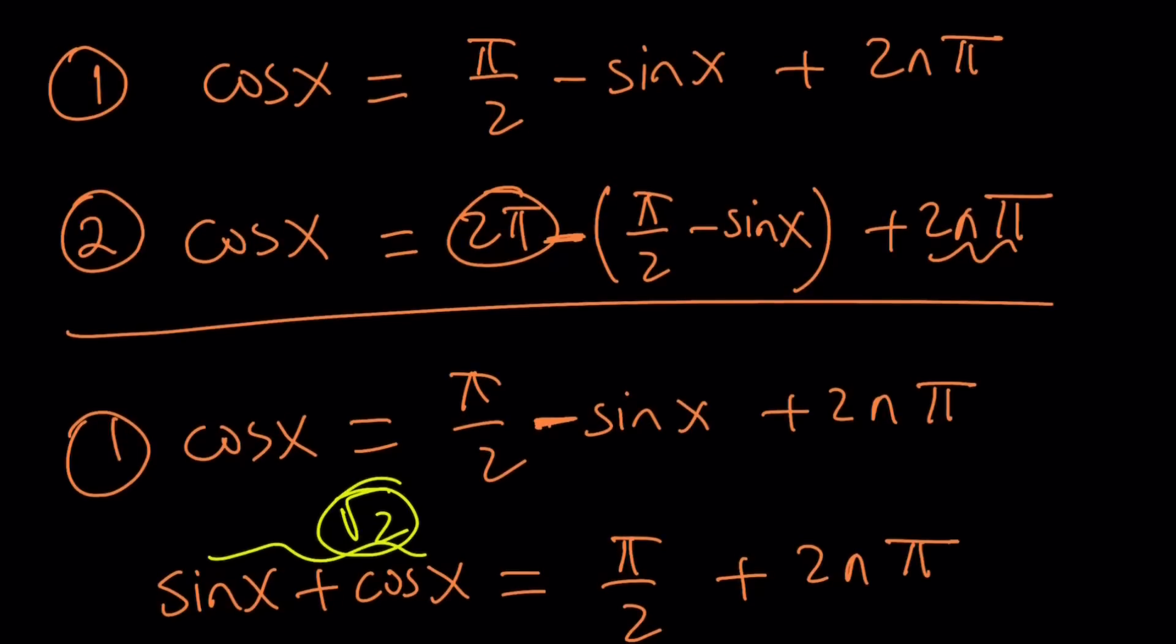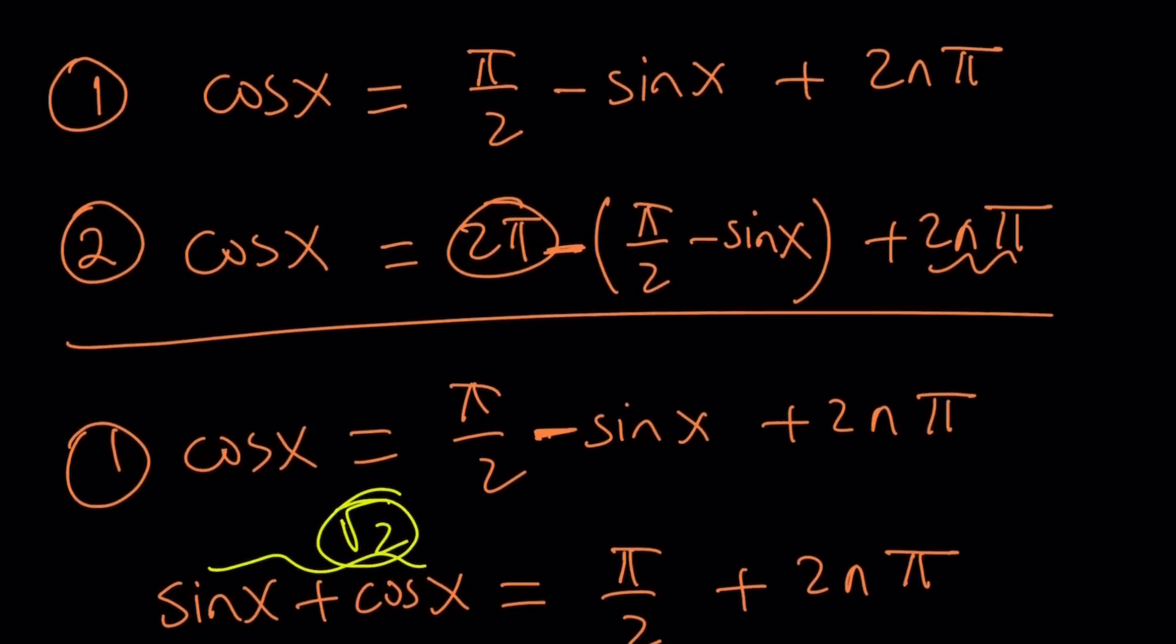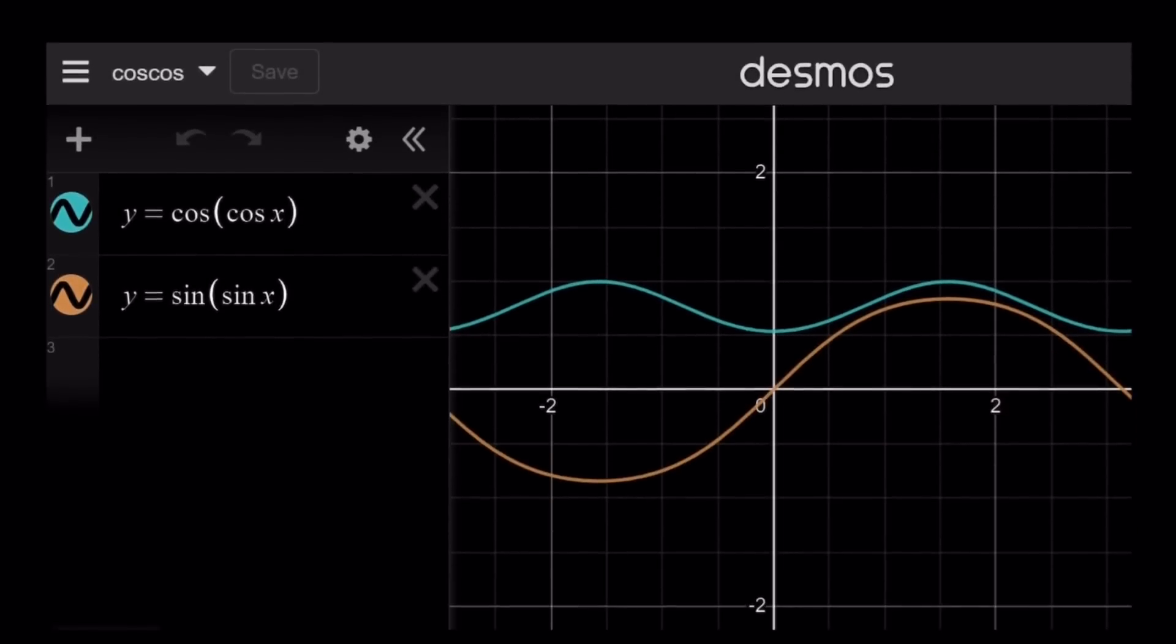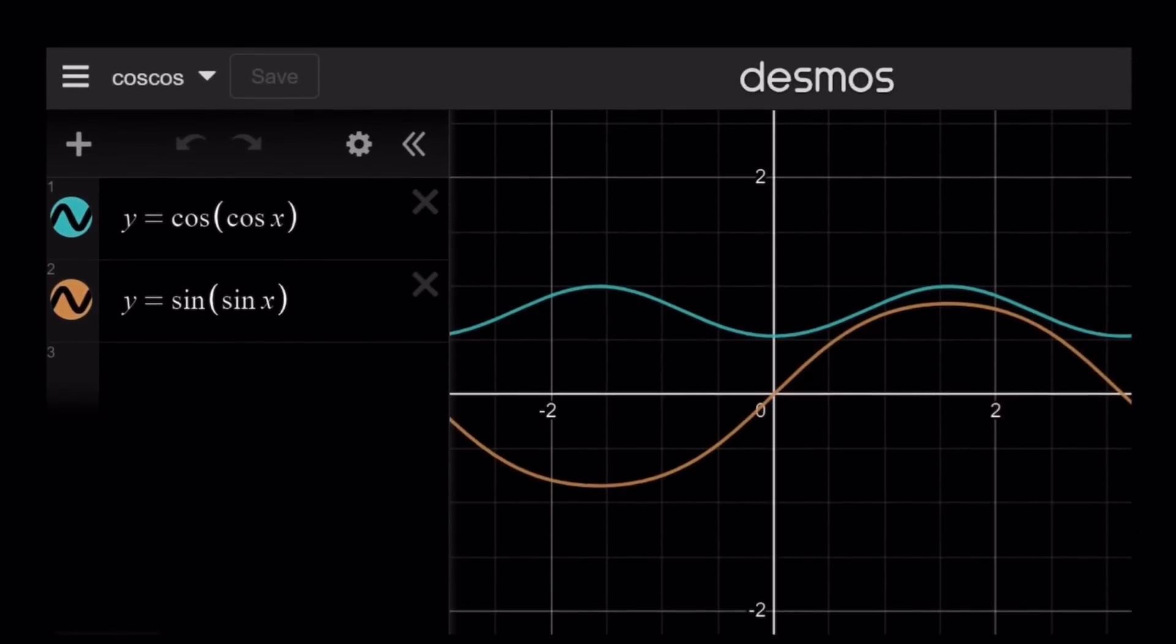The second one shouldn't give you real solutions either. You can check it out, but I'm going to show you the graph and finish up. Here we go. The graph of cosine of cosine x and sine of sine x. Very interesting. They get so close, but they do not intersect. And they kind of look like sine and cosine with a twist.